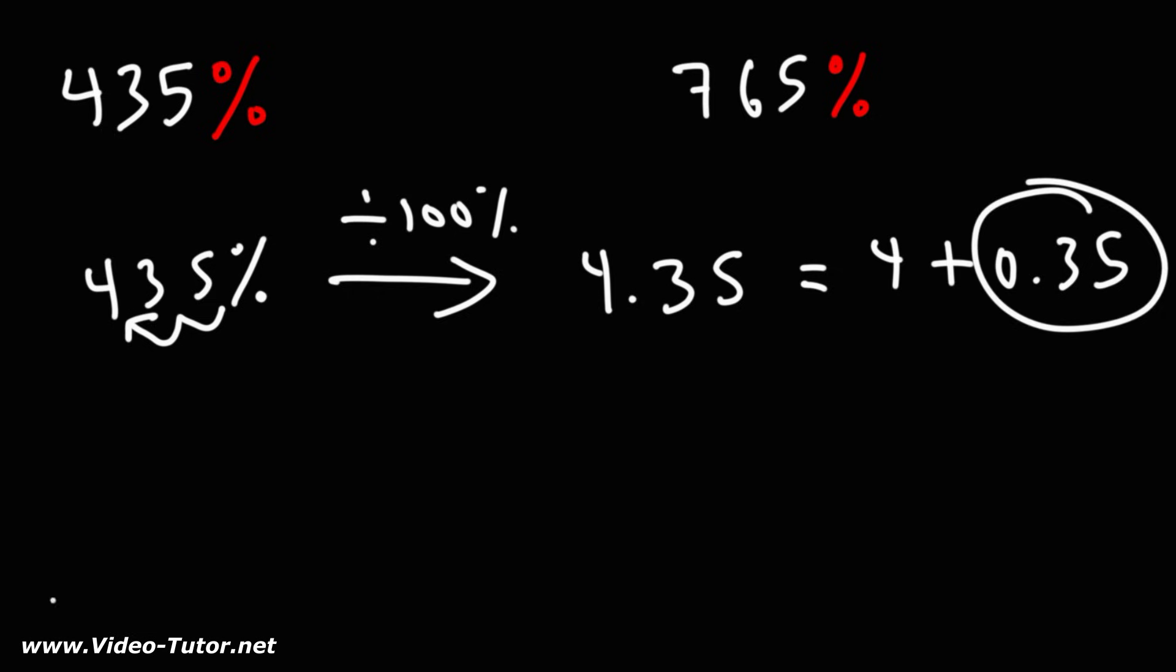Next, the decimal portion of the number, convert that to a fraction. Notice that, let's put it over 1. Notice that we have two digits to the right of the decimal point. In this case, we're going to multiply it by 100 over 100.